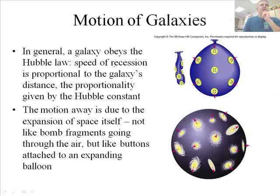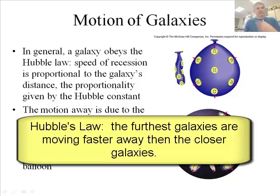In general, a galaxy obeys Hubble's law. The speed of recession is proportional to the galaxy's distance. That means that, big fancy word, that means the ones that are further away, the further away ones, they're moving faster than the ones that are closer together.